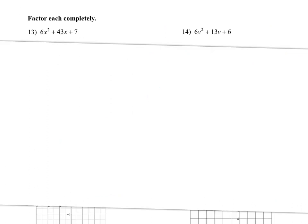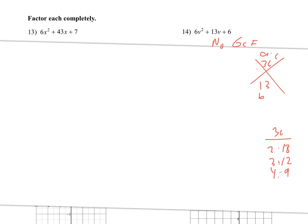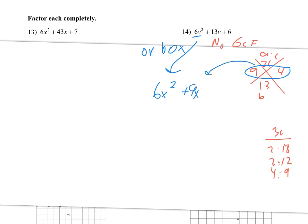Next, number 14 — we want to factor. There's no GCF in this case, so since it's a trinomial, I'll do a times c on top and b on bottom: that's 36 and 13. Thinking about what multiplies to make 36: 2 and 18, 3 and 12 — that won't add to 13. But 4 and 9 will work, adding up to 13. Since we have the 6 out front, we have to use our grouping technique.